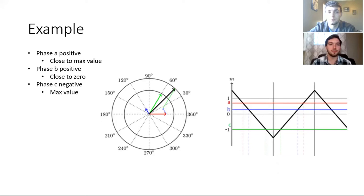We have three phases: phase A, phase B, and phase C. On the right compared to the triangle waveform we can see phase A is positive and it's a little over half. Phase B is also positive going to 120 degrees but it's close to zero and phase C is negative at its full value.